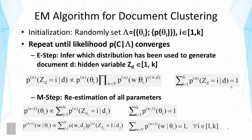The hidden variable Z_D can take a value from 1 through k, representing k different distributions. We apply Bayes' rule to infer which distribution is more likely to have generated this document — that is, computing the posterior probability of the distribution given the document. This is proportional to p(θ_i), the probability of selecting the distribution, times the probability of generating the whole document from that distribution, which is a product of all the word probabilities.